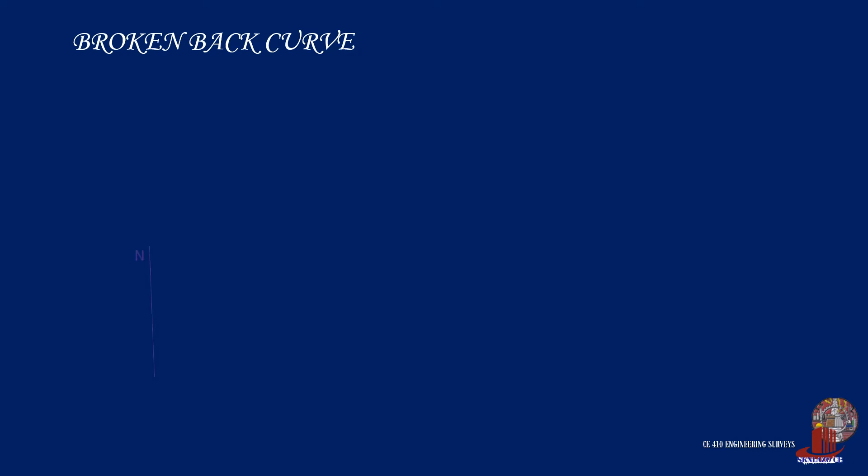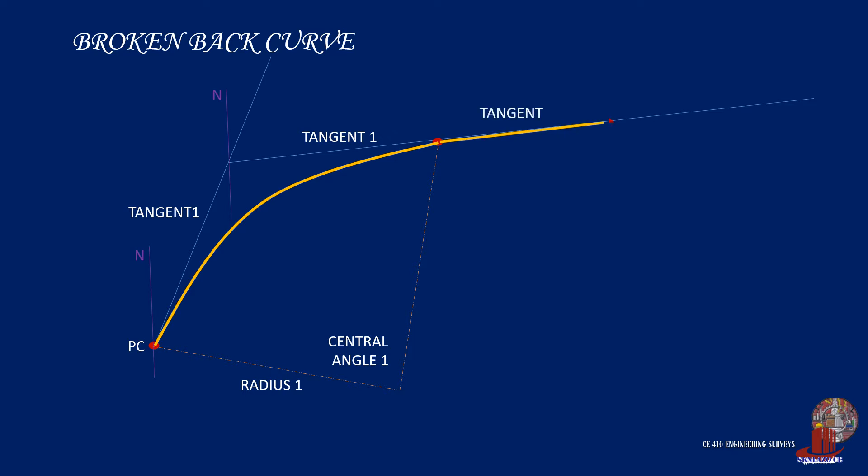A broken back curve has a short tangent in between the two simple curves. Computation for this type of curve will still integrate the elements of tangents and the simple curves.